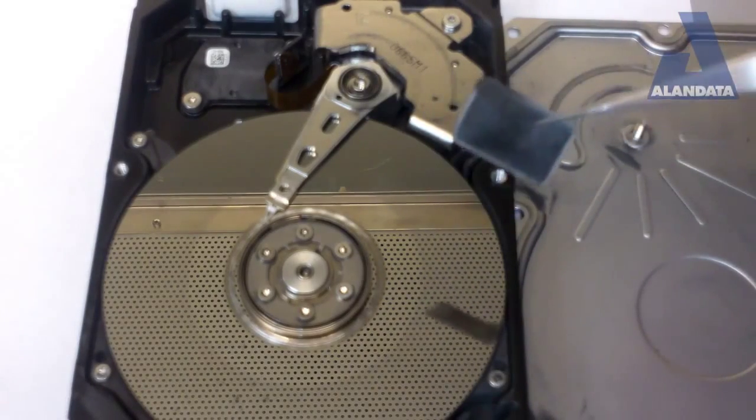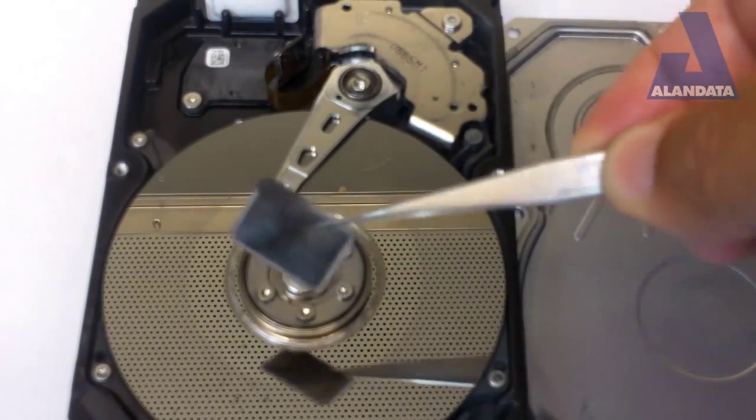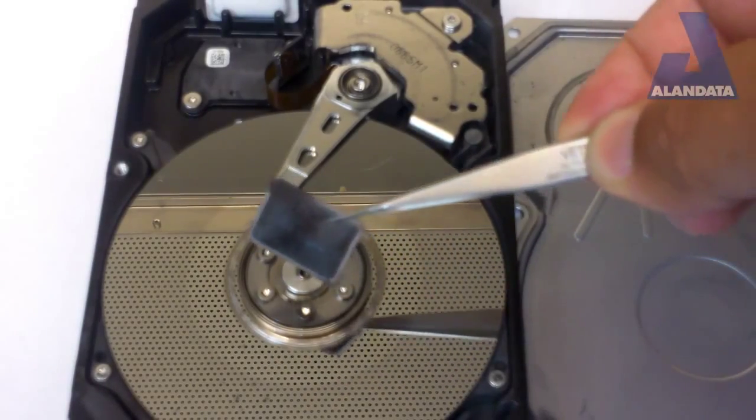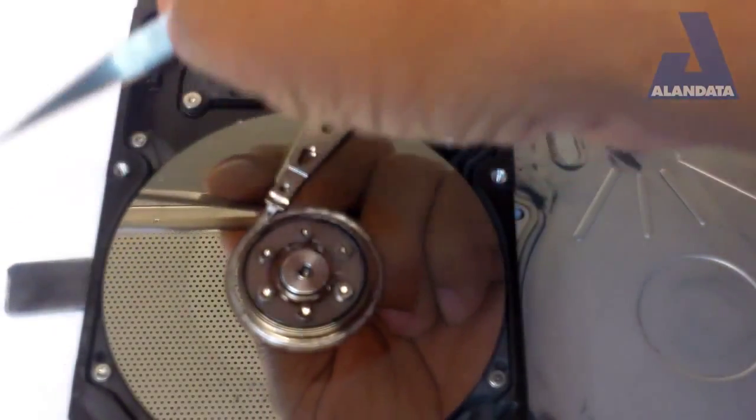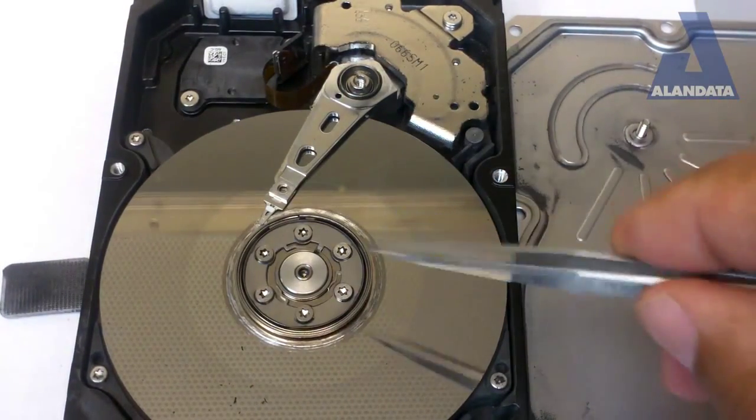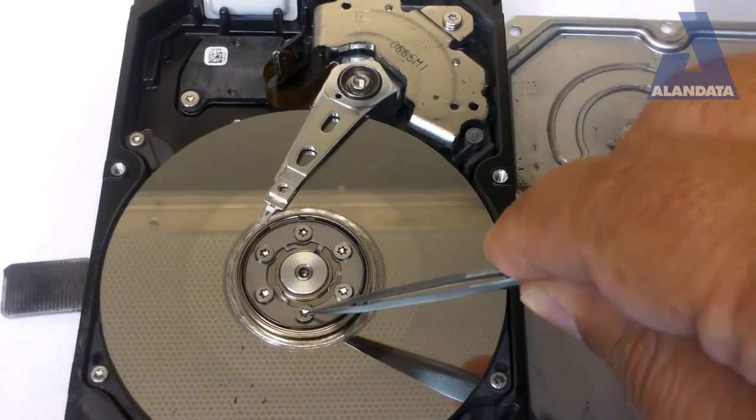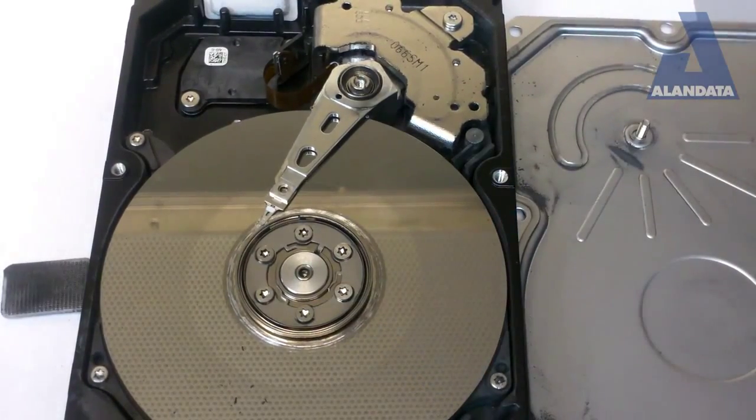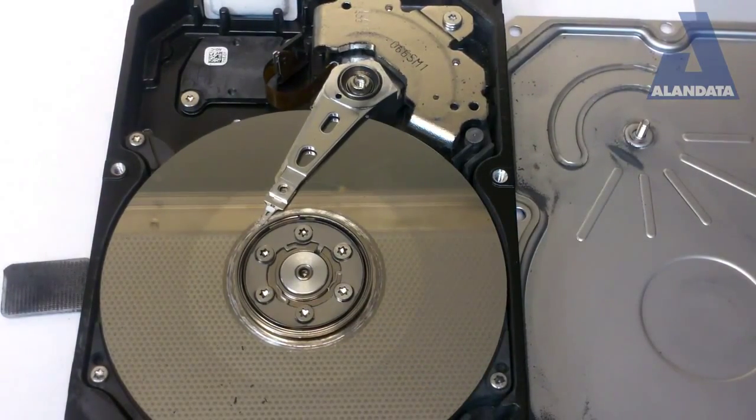And this is the white filter. This is supposed to be a white filter to filter out all the particulates that float around in the drive. And you can see that's nowhere near white. And oh yeah, it seized too, so it spun until it seized is what it did.